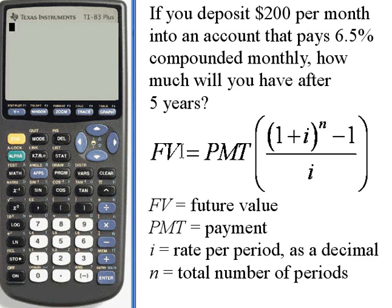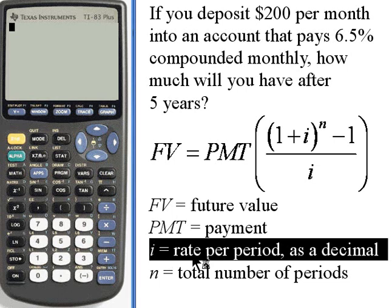The future value equals the payment, that's how much money you pay every month. In this case it's $200. We're going to multiply the payment by 1 plus i.